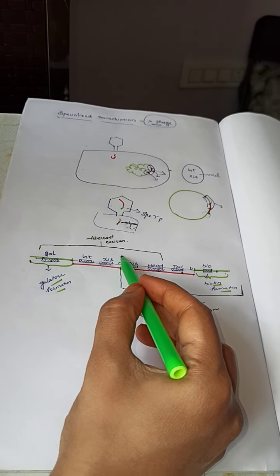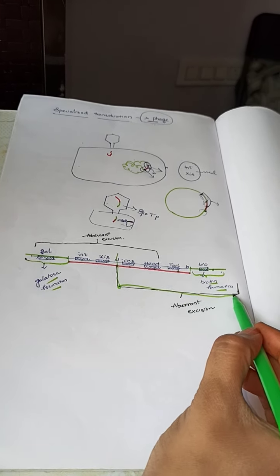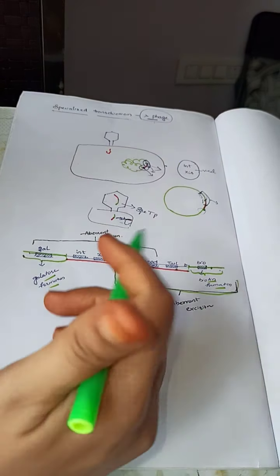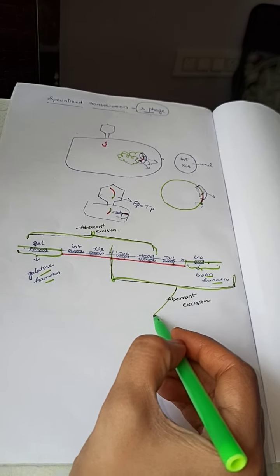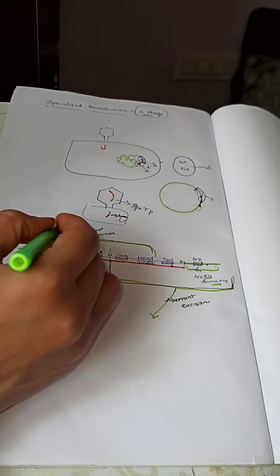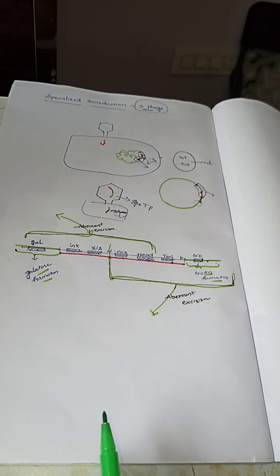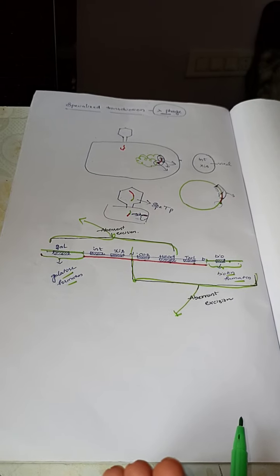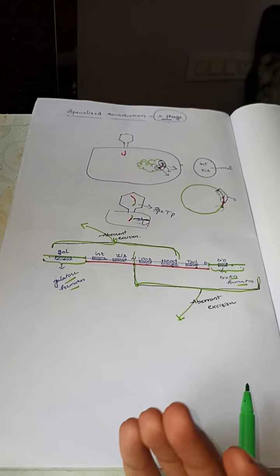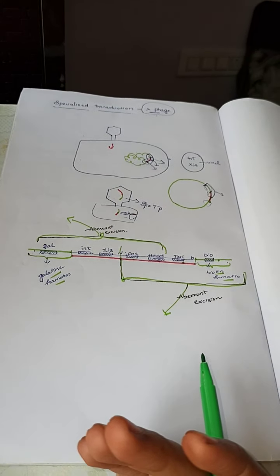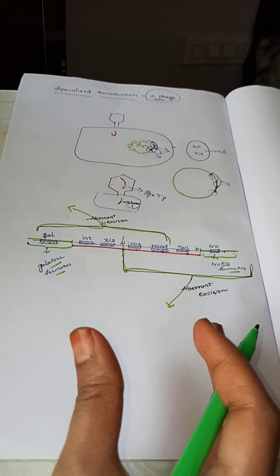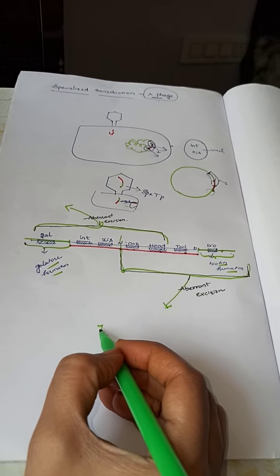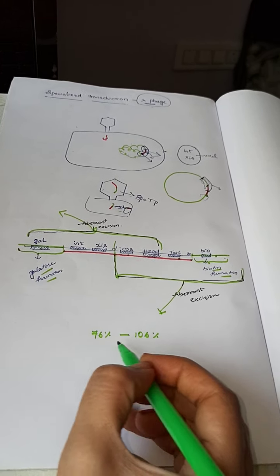Aberrant excision can happen in this way: a cut may happen on the gal side or a cut may happen on the bio side. So either the gal-containing fragment or the bio-containing fragment can get packed into the virus particle. The virus packing has a limit — it cannot accommodate a DNA fragment that is too small or too large in length.